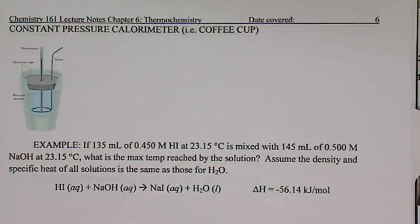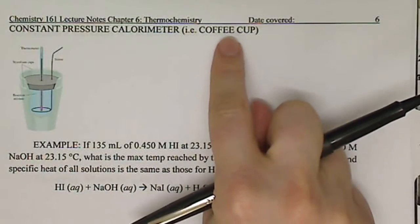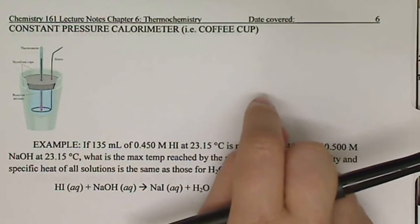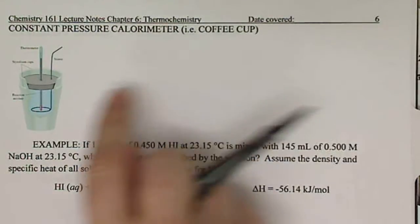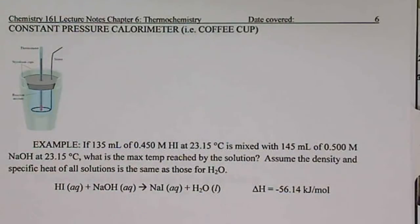We've already talked about bomb calorimetry, or constant volume calorimetry, which is what you've done with your peanut lab. The following lab, our Hess's law lab, is going to be working off of a constant pressure calorimeter, which is also called the coffee cup calorimeter. It's a very fancy situation — we have two styrofoam cups stacked into each other.